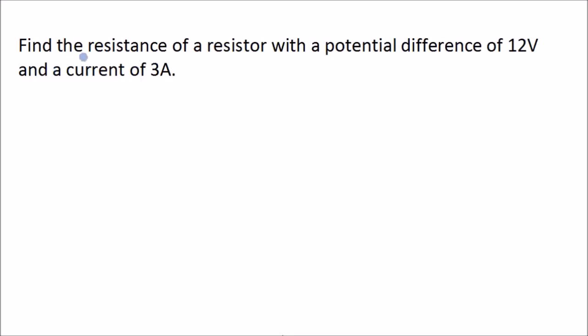This question is asking us to find the resistance of the resistor. They've given us the potential difference, 12 volts, and the current, 3 amps. We know that V equals I times R, but we need to find the resistance, so we need to rearrange this equation. It needs to look like R equals V divided by I.